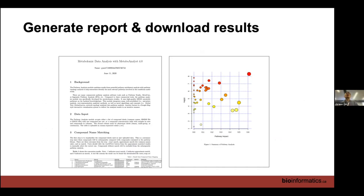For report generation, we have PDF report generation with embedded results. Go to the last page, download, and you can generate a report. Once generated, it's static — not interactive like the online version. The interactive version is online. For publication, you'd put it in a PowerPoint and manually label the few pathways you want to emphasize before you forget what each node is. You can label everything in the community, but you won't be able to read it all, so decide which pathways to emphasize.